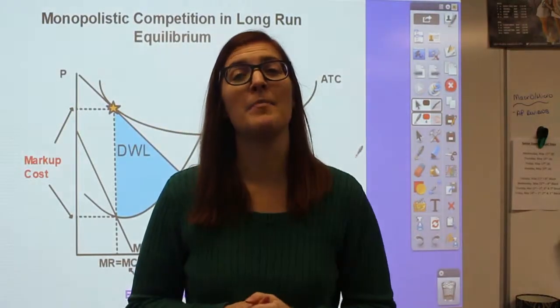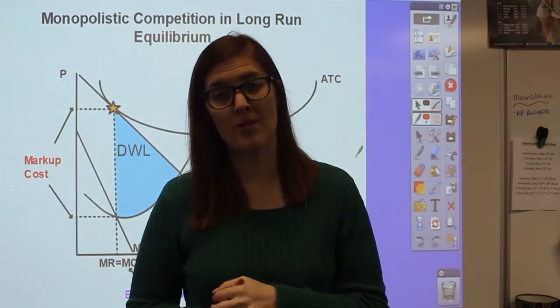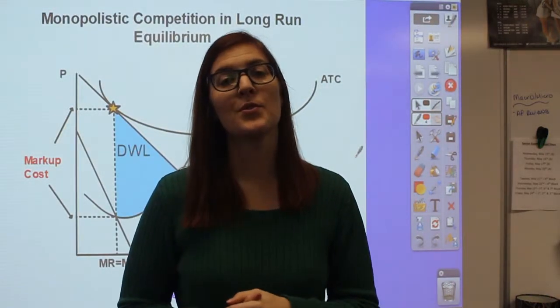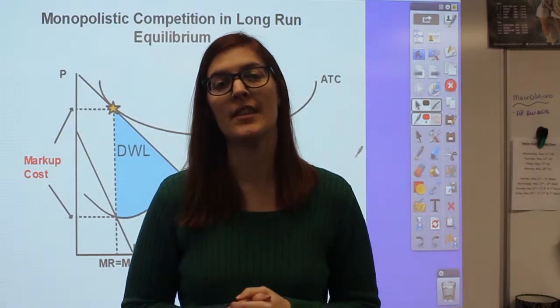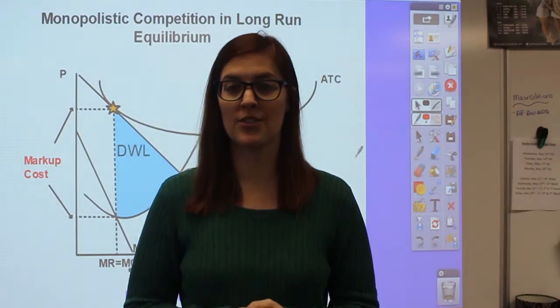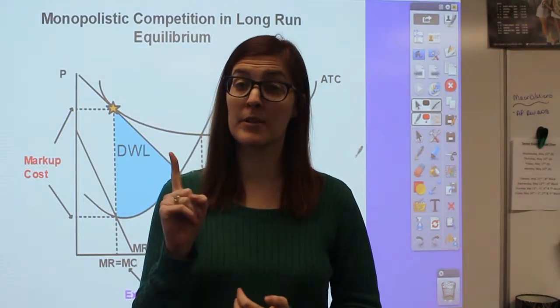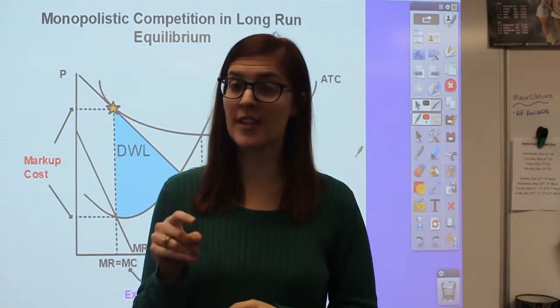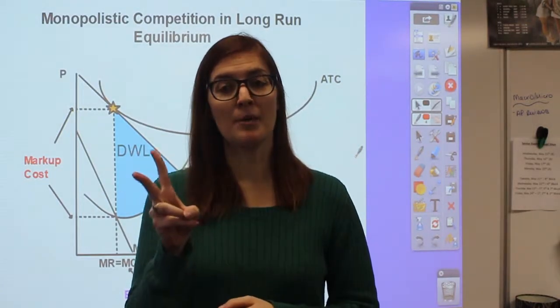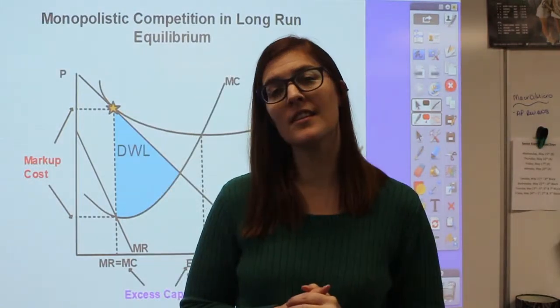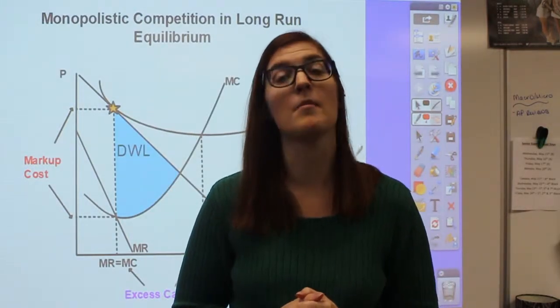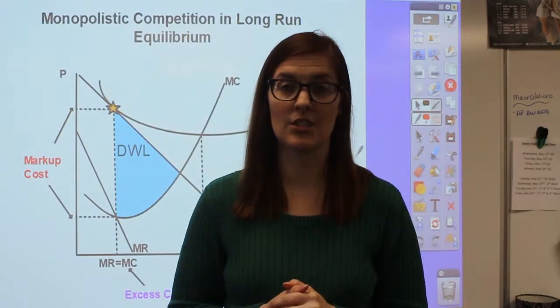This is the Unit 4 AP Microeconomics Review. In Unit 4, we covered the three market structures of monopolistic competition, oligopolies, and monopolies. We're first going to cover monopolistic competition.